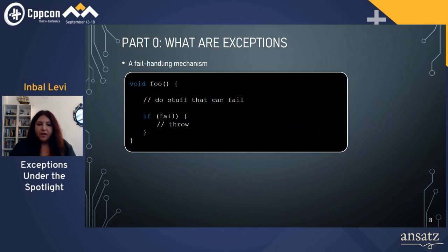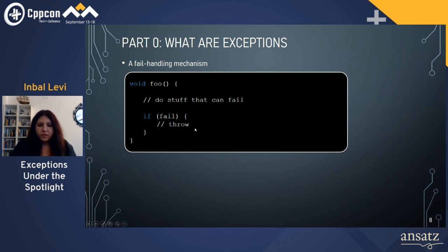What are exceptions? Exceptions are a fail-handling mechanism. Here we have a function called foo — foo can do stuff, and in case foo fails it can throw, either from standard library functionality or other things. The error is propagated up the stack.